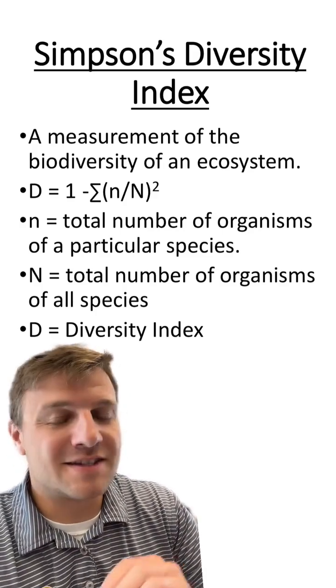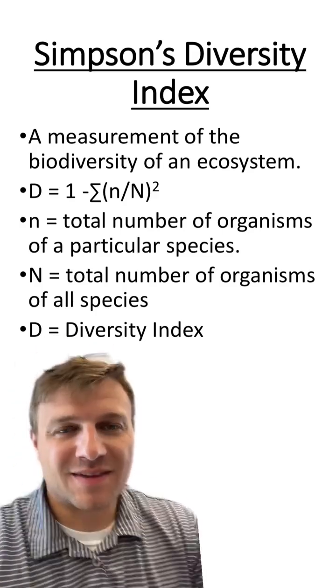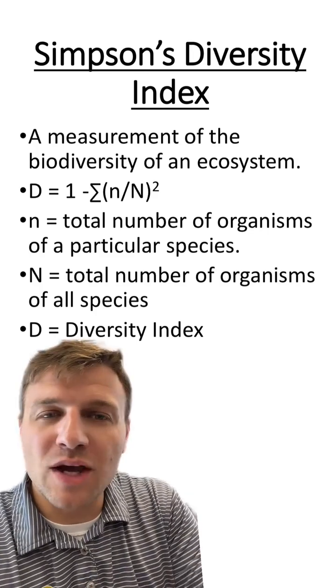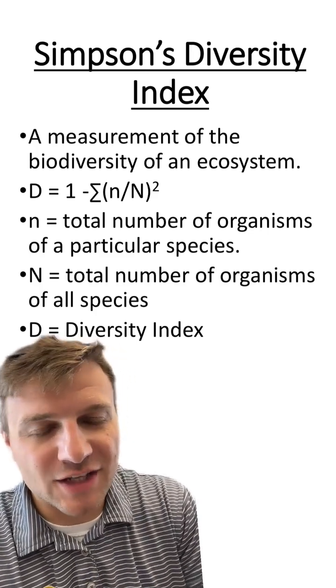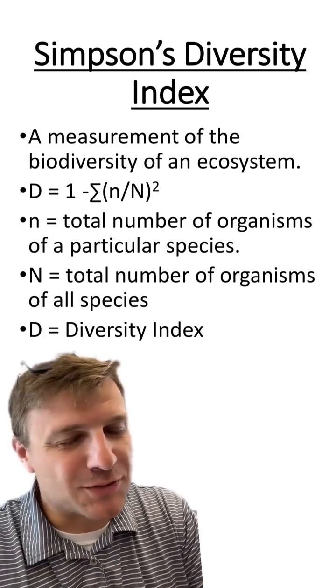Let's go over something within ecology known as Simpson's Diversity Index. This equation is basically a way we can measure the biodiversity of an ecosystem. And don't get too scared, but this will involve some math.